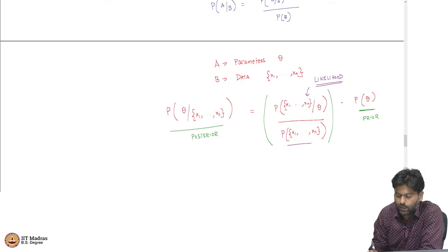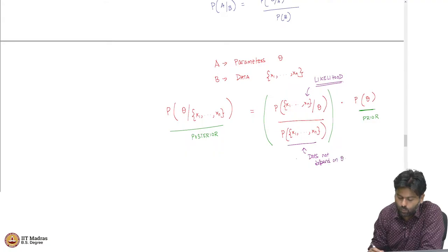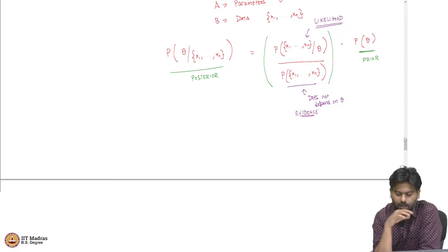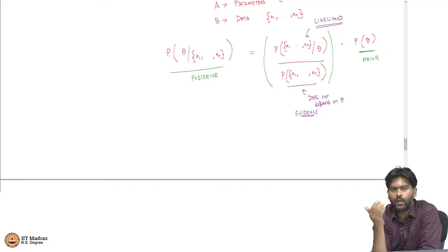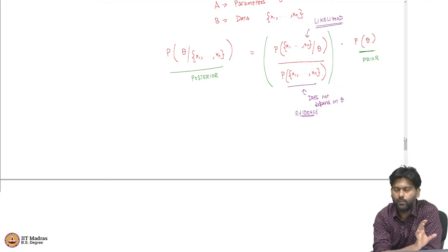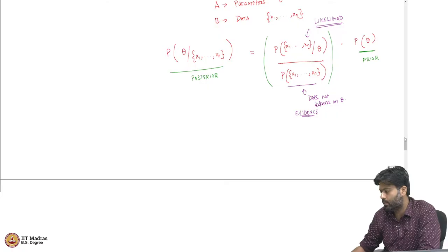The denominator is independent of theta — it is called the evidence, the chance that you actually observe the data itself. Since it does not depend on theta, you can think of the posterior as proportional to the likelihood times the prior. You are re-weighting your previous belief using the likelihood, and that gives you the posterior. That is what Bayesian modeling is essentially telling us.